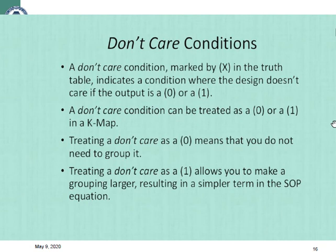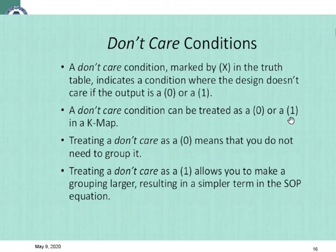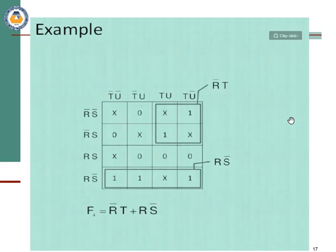Next we have don't care conditions. Don't care conditions are those conditions whose value we can consider either zero or one. Usually where don't cares appear we put an X. These are conditions that are given as part of the problem. If we are solving for min terms, we can consider the X as one and group them with the ones.